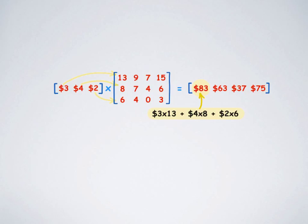So we got a one row, four column resultant matrix.